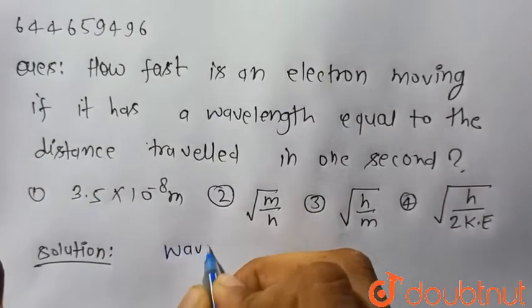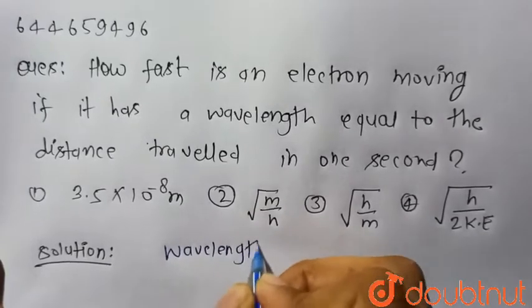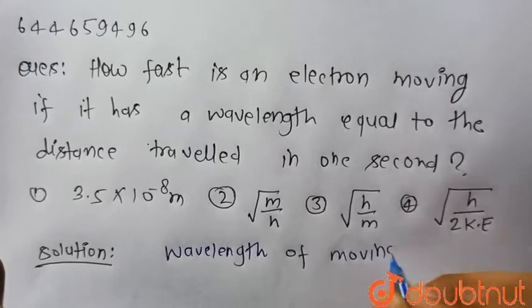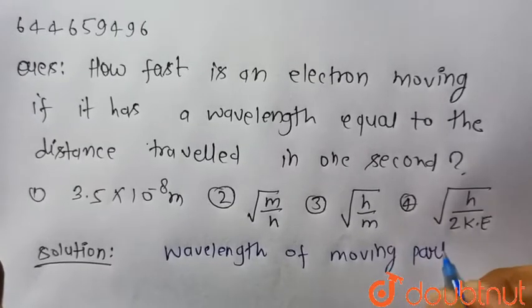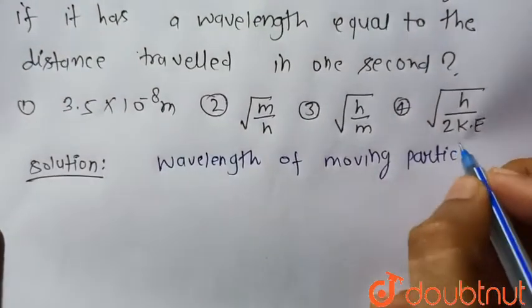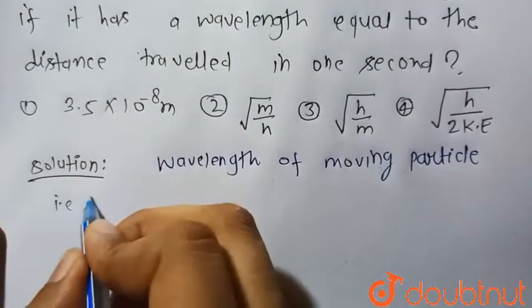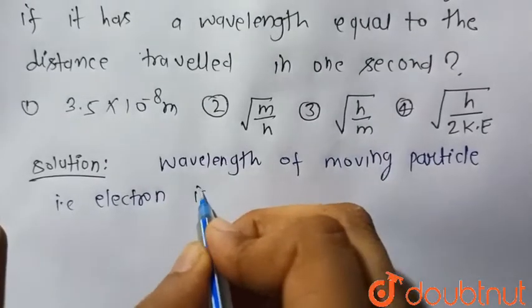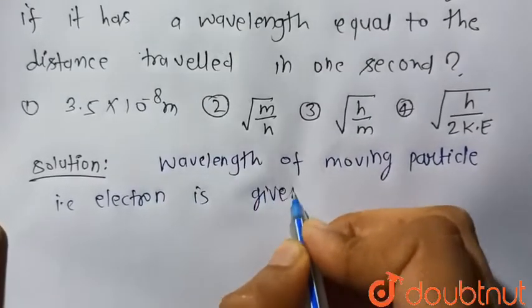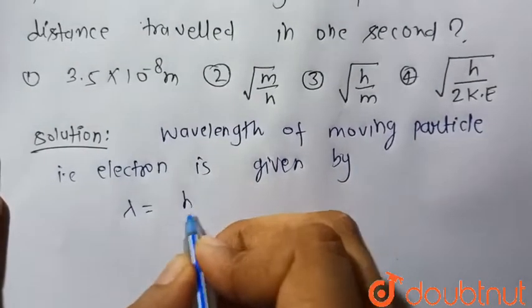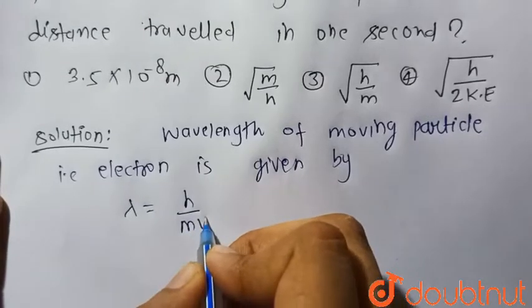We know that wavelength of moving particle, that is here electron, is given by de Broglie equation: lambda is equal to h upon mv.